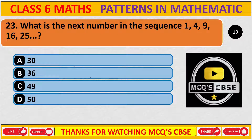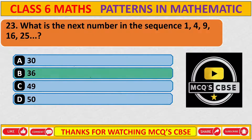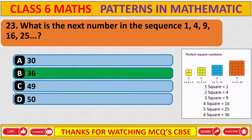What is the next number in the sequence 1, 4, 9, 16, and 25? The correct answer is B: 36. The pattern is square numbers — 1²=1, 2²=4, 3²=9, 4²=16, 5²=25, and 6²=36. It is a square pattern.